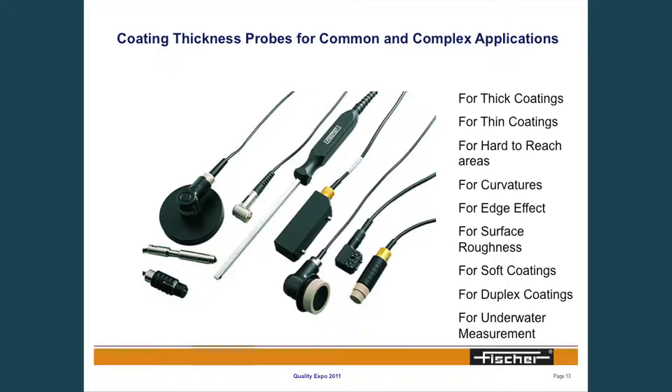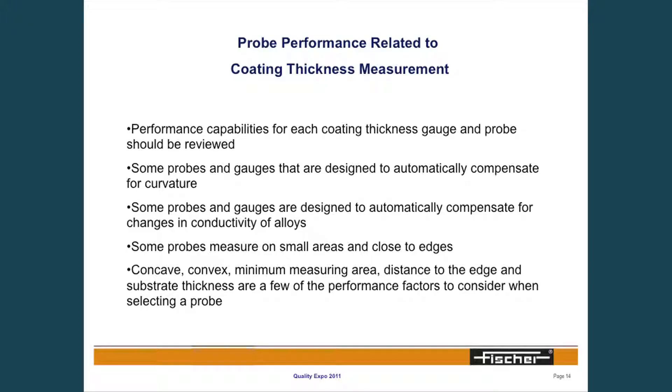There are different probes for different applications. We have probes ideally suited for rough surfaces, probes designed for very soft coatings so I don't indent the probe into the surface, and double-pronged probes for measuring on rough surfaces. Different geometries are available depending on where you need to take the measurement. Probe performance includes the capability of the probe, the trueness and repeatability, and the ability to measure on those different geometrical surfaces.